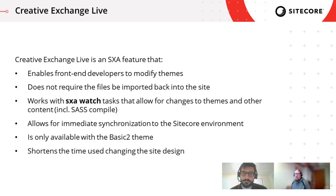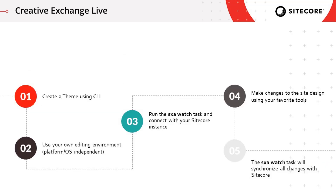Let's look at the overall workflow. What we've already done is creating a theme using the SXA CLI with the SXA new command. Then we open our theme in Visual Studio Code, or any other platform you like for editing front-end assets. Before you start editing, you can already run the SXA watch command to connect to your site — it watches for your changes, and once you modify your SASS or JavaScript files, those get automatically synced into Sitecore.